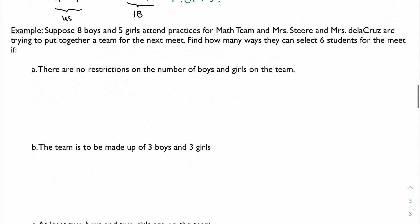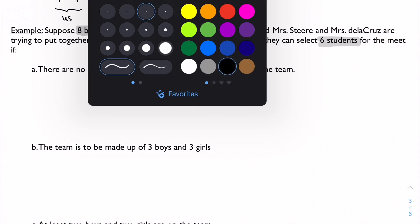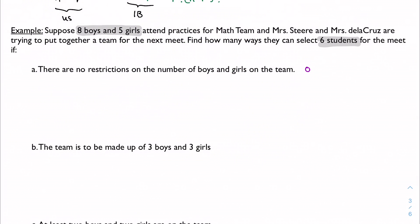So let's try an example. Suppose 5 boys and 5 girls attend practices for math team, and we're trying to arrange the teams. So we've got 5 boys and 5 girls, and we want a group of 6 students to make the team. Let's first suppose that there are no restrictions on the number of boys and girls in the team. First question I want to know is, does the order matter? No, the order doesn't matter. Order does not matter. So how many total students am I choosing from? That'd be 8 plus 5, which would be 13. So from 13, I'm choosing 6 of them.